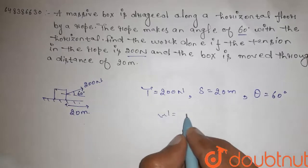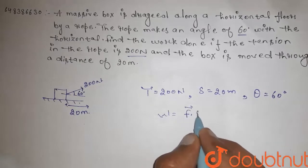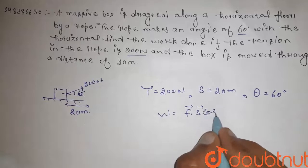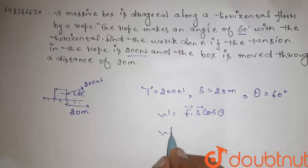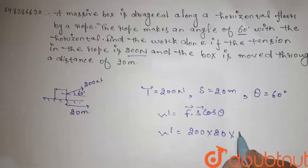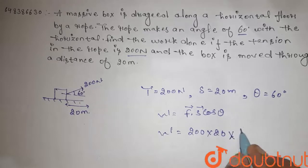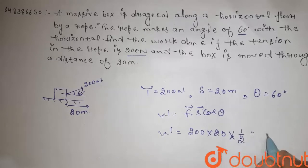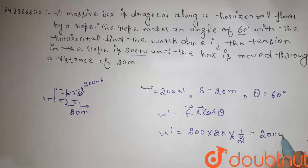So work done, that is F dot S cos theta. The force is 200 N, displacement is 20, cos theta, cos 60 degree is 1 by 2. The final answer is 2,000 J.